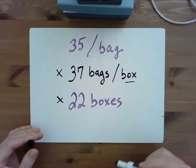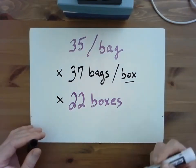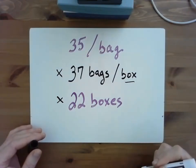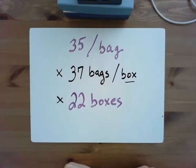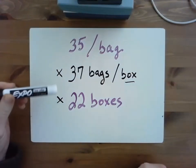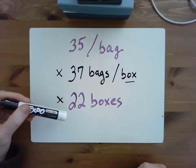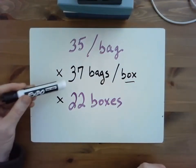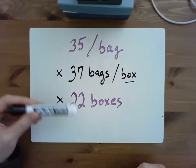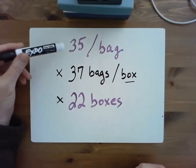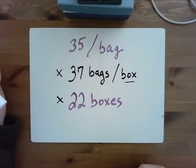We can also do this the other way around — that's the commutative property of multiplication. So we could determine the total number of bags in 22 boxes and say 37 times 22, and then multiply that number times 35.